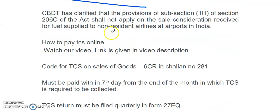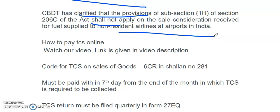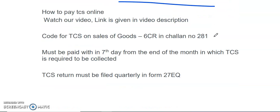CBDT has also clarified that Section 206C-1H is not applicable on sale consideration received for fuel supply to non-resident airlines at airports in India. So whatever fuel is supplied to non-resident airlines at airports in India, for such consideration received, TCS under this section is not applicable.